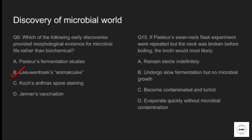Question number ten: if Pasteur's swan neck flask experiment were repeated but the neck was broken before boiling, the broth would most likely — option A: remain sterile indefinitely. Option B: undergo slow fermentation but no microbial growth. Option C: become contaminated and turbid. Option D: evaporate quickly without microbial contamination. The correct answer is option C, become contaminated and turbid, because airborne microbes can enter the broth and cause contamination.